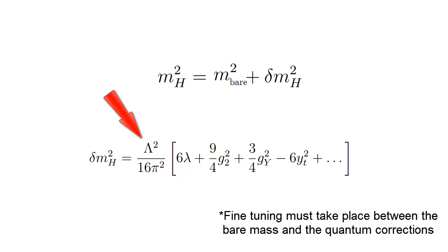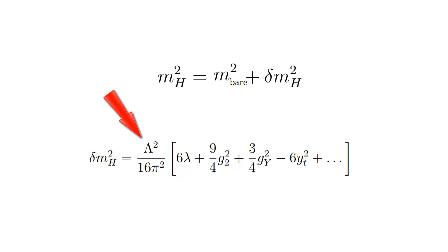An extreme fine-tuning with the quantum correction term must take place in order for the observable mass not to be at the energy scale of the Planck mass and energy. This constitutes a so-called hierarchy problem.